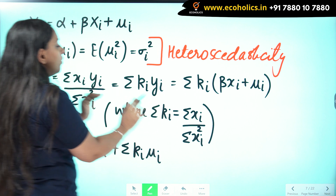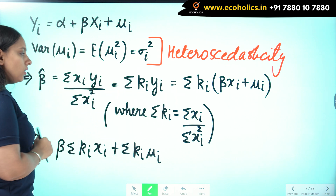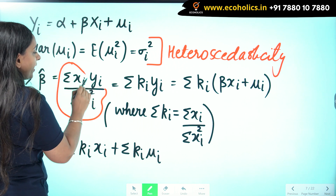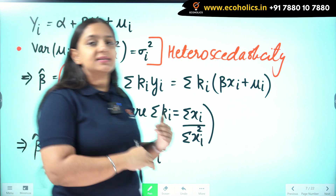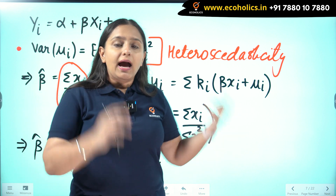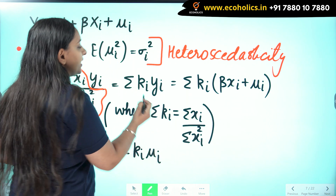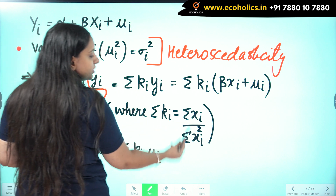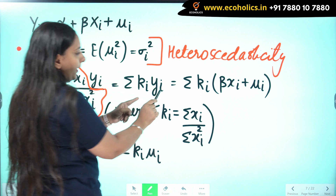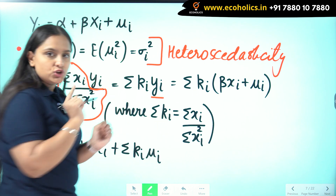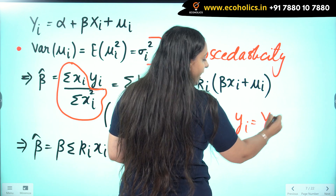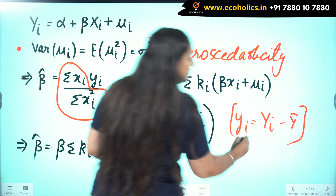I can convert this into a linear form of yi. By taking summation xi upon summation xi squared as ki — a weight, since xi and xi squared are explanatory variable values treated as given — I can write beta hat as summation ki yi, where yi here is in deviation form.